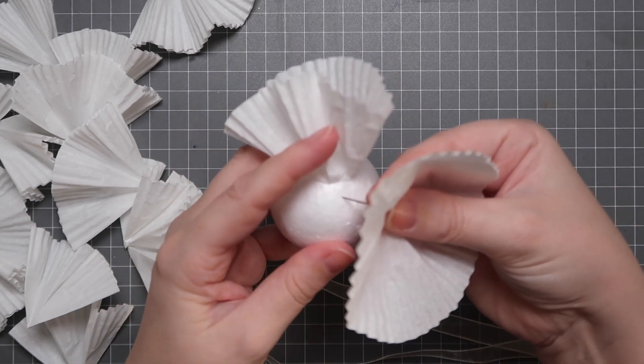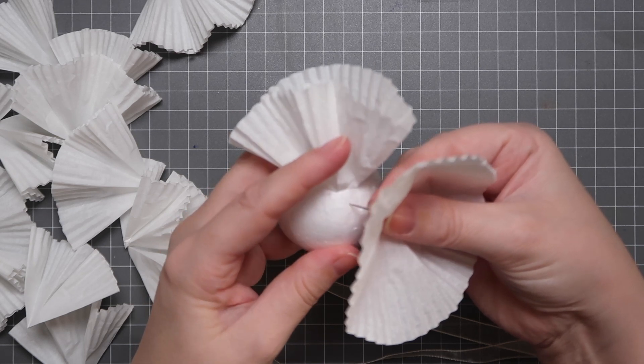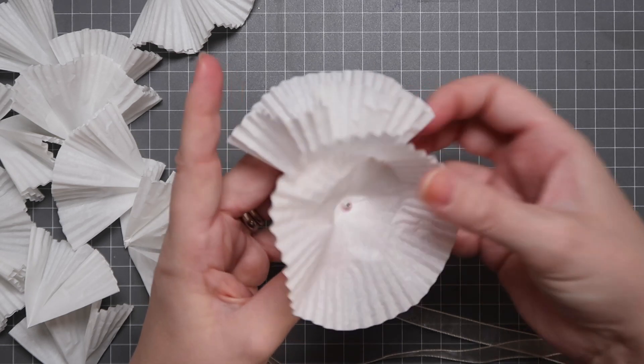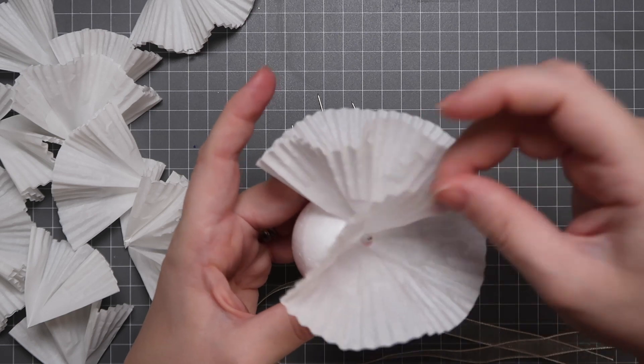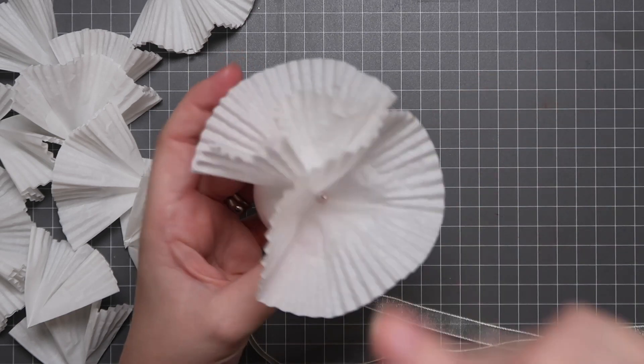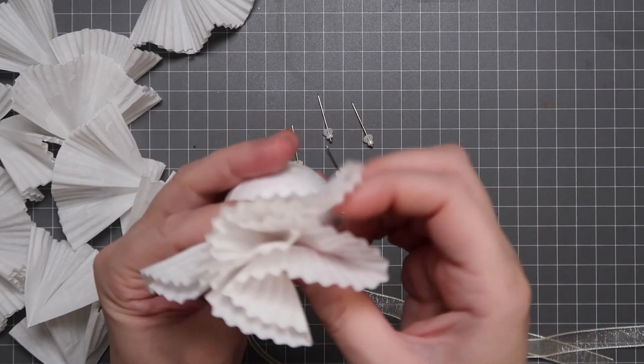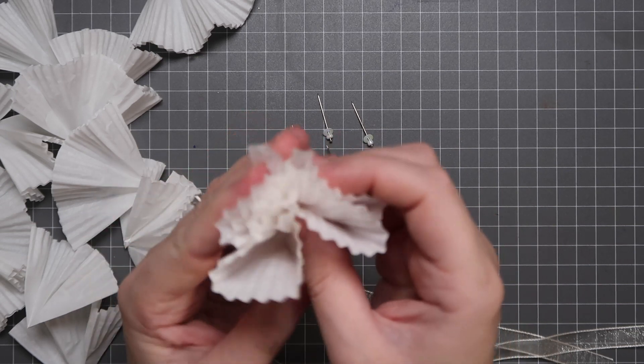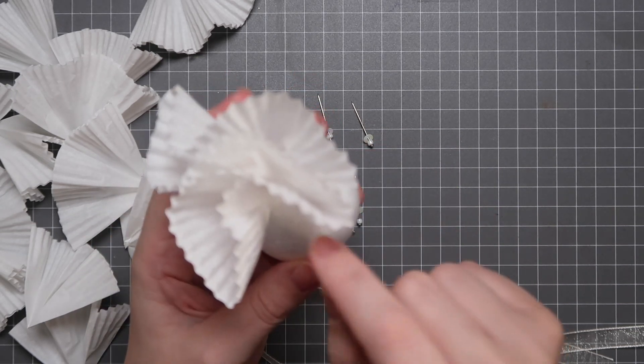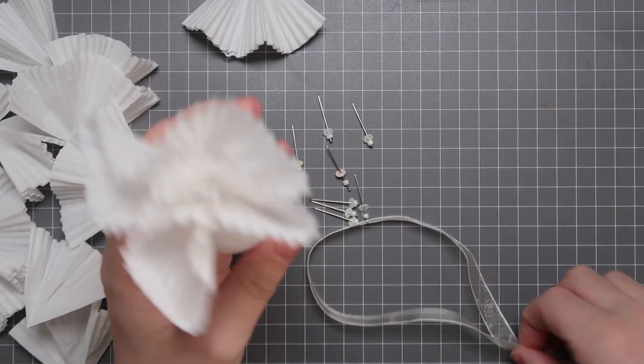And do a couple more. Next one is close to maybe a quarter of an inch to a centimeter away from the first one. And of course, again, if you're gluing it, just stick a little more glue and then pop it on. The nice thing about glue guns is that it dries very quickly.